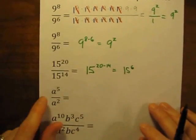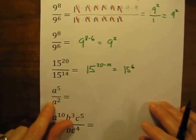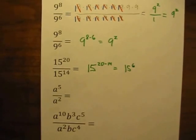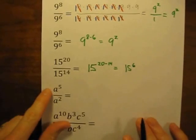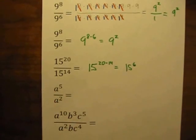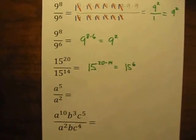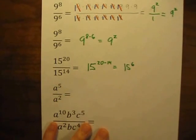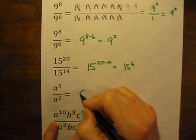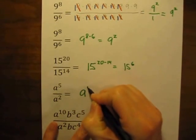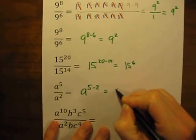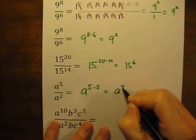How about this one? Now we don't have numbers in the bases — we just have a variable, a letter, the letter A. No problem, the quotient rule still works. As long as the letter is the same letter, the base is still the same and you can still use it. So A to the 5th divided by A to the 2nd power is going to be A to the 5 minus 2 power, which equals A to the 3rd power.